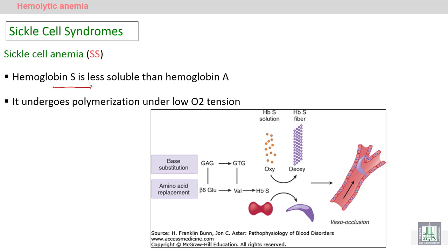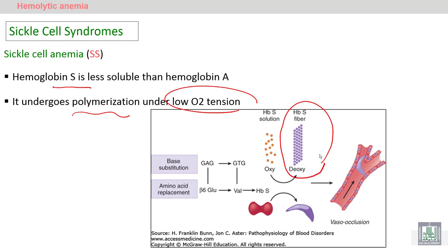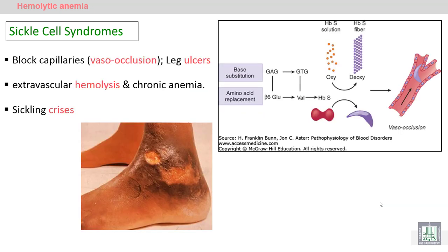In sickle cell anemia, hemoglobin S is more than 50% as mentioned. Hemoglobin S is less soluble than hemoglobin A, so polymerization of hemoglobin S occurs in hypoxia. The problem will appear in hypoxic states like high altitudes or during operations. Sickling will increase and will lead to complications and crisis like vaso-occlusion.